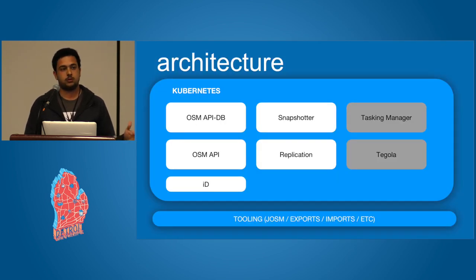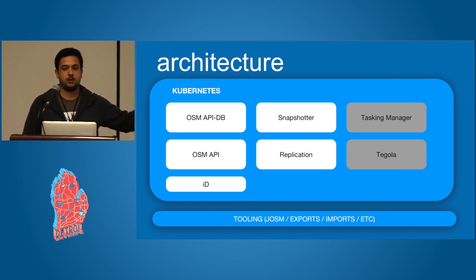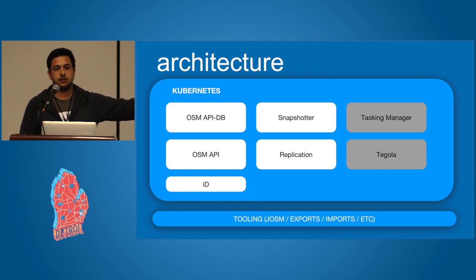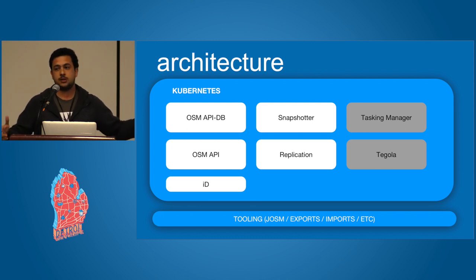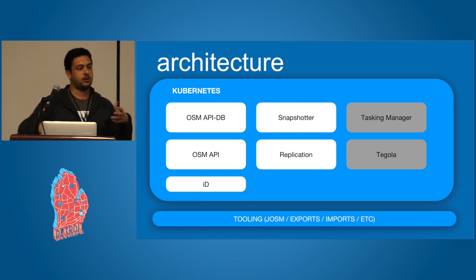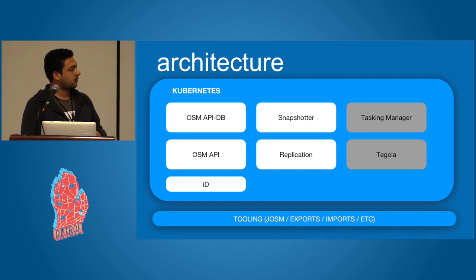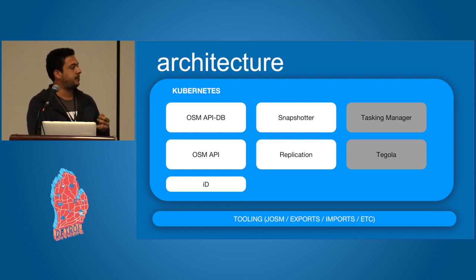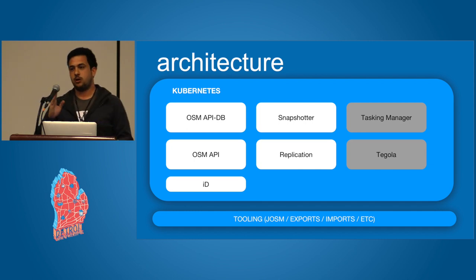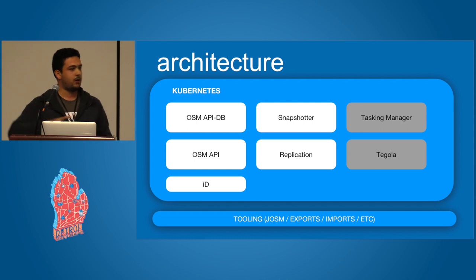Here's the architecture. Kubernetes is a system by Google that allows us to spin up machines, package them using Docker, and allows us to create something that we can just turn on or off. Our current architecture for OSM Seed has the OSM API and the database. It has replication, so you can look at your edits over time and replicate them to other databases.